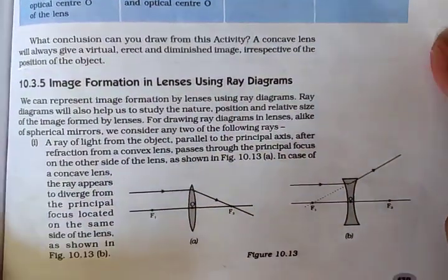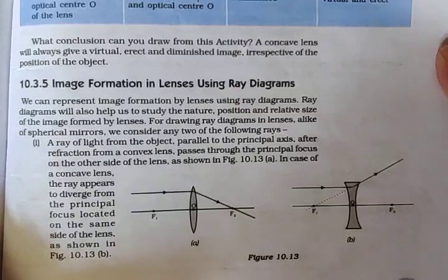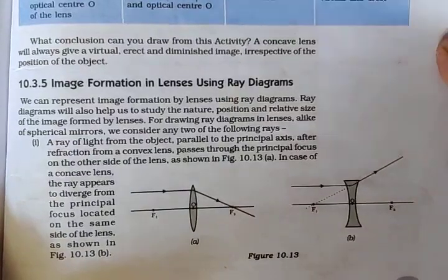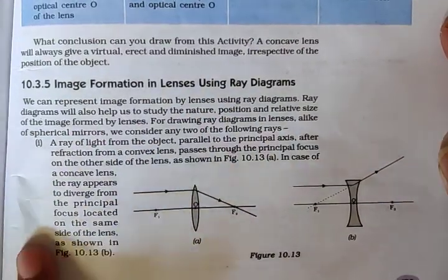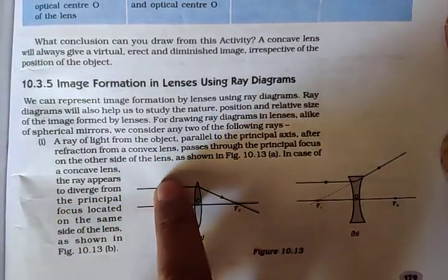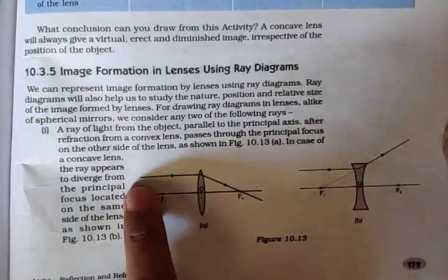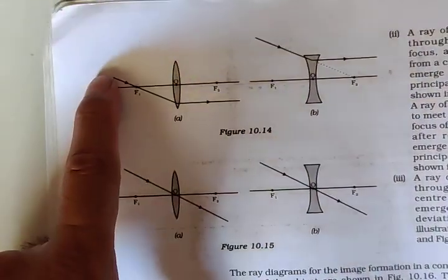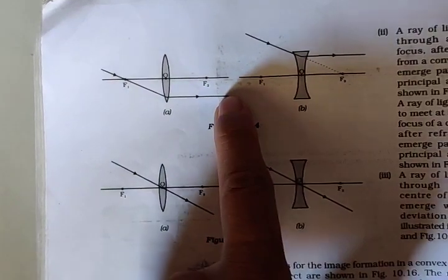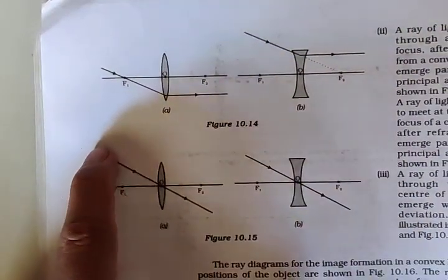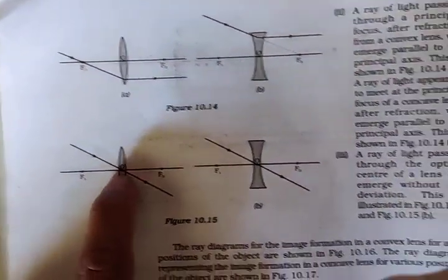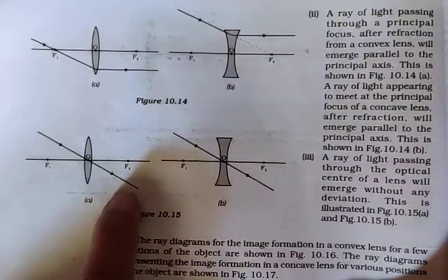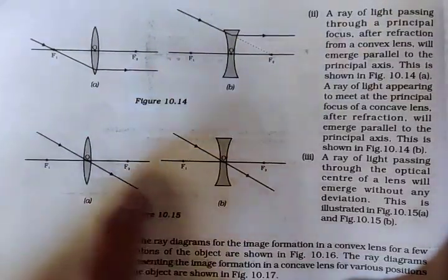Hello friends, now we are going to start with our next session on image formation in a lens. Last time we saw three rays: any ray passing parallel to the principal axis will pass through the focus. Any ray passing through the focus becomes parallel to the principal axis. A ray passing through the optical center moves in a straight line.